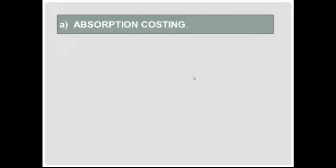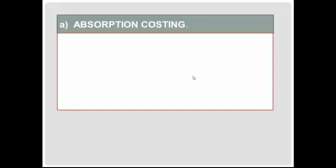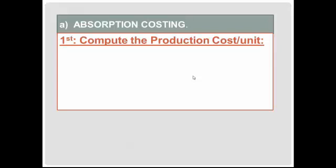Based on this, we're supposed to calculate net operating income and value ending finished goods inventory using both absorption costing and variable costing. We'll begin with absorption costing. In order to prepare an income statement or value inventory, we are going to need to compute the production cost per unit.